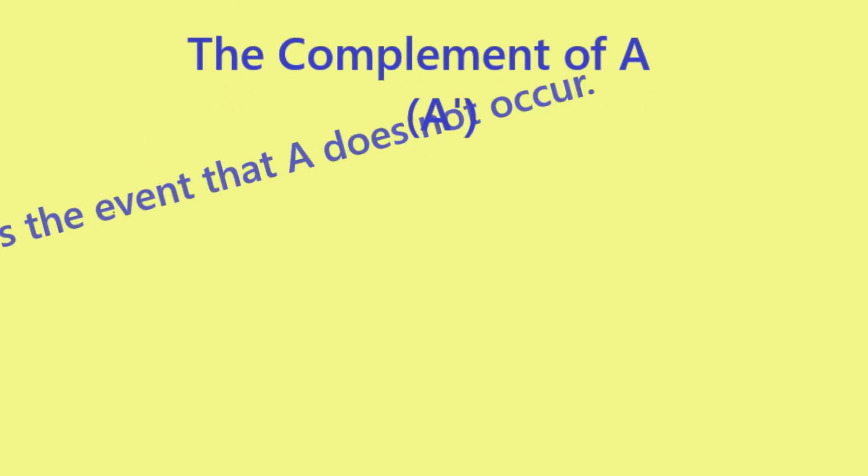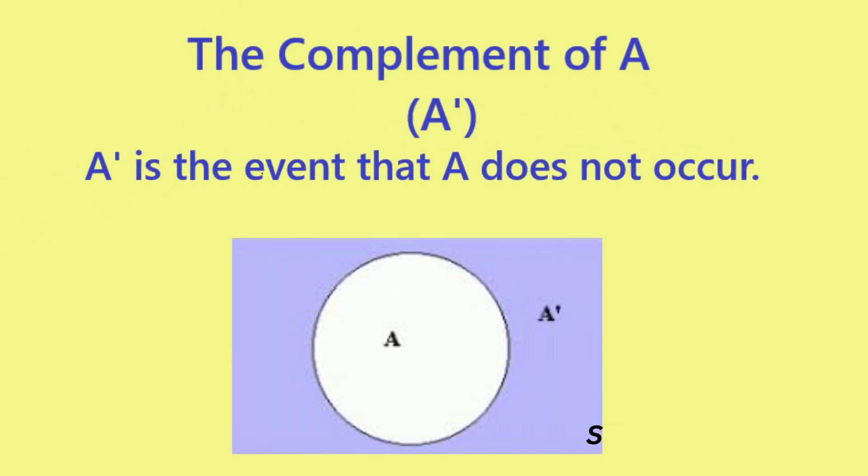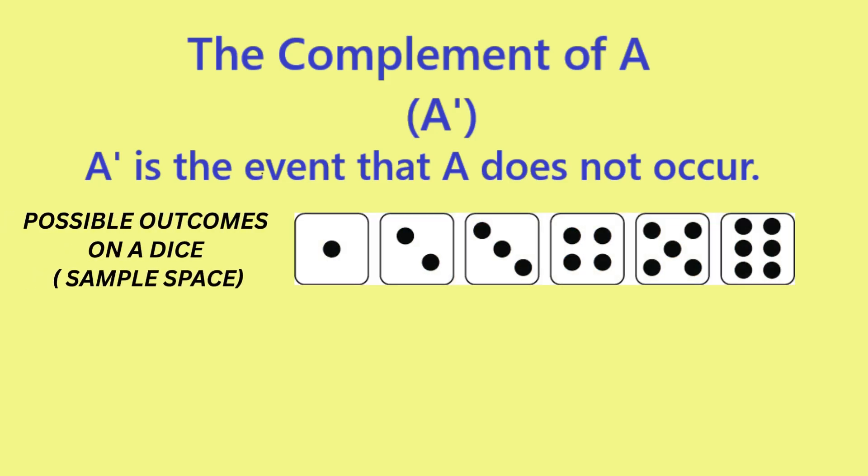The notation A complement denotes the event that A does not occur. Using the same rolling of a die situation, let A be the event of rolling a 4. The probability of A is 1 sixth, since there are 6 possible outcomes and only 1, 4 on the die.